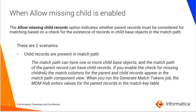The match path can have one or more child base objects, and the match path of the parent record can have child records. If you enable the check for missing children, the match columns for the parent and child records appear in the match path component view. When you run the generate match tokens job, the MDM hub enters values for the parent records in the match key table.